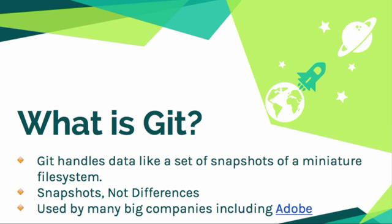So Git handles things a little differently than other version control systems, and there are multiple version control systems. For example, you've probably heard of Subversion — that's one. Git is similar in that it's version control, but what it does is it handles the data kind of like a snapshot. So it tends to view it as snapshots, not differences — more like a certain instance in time.